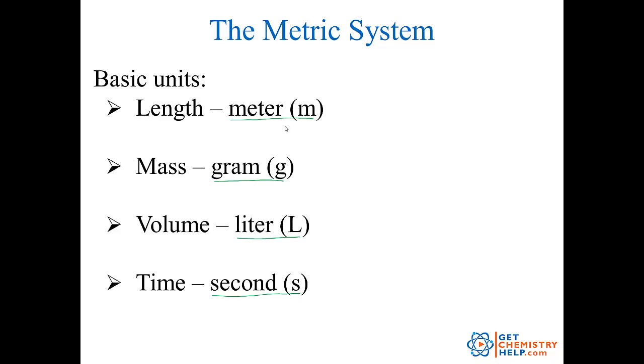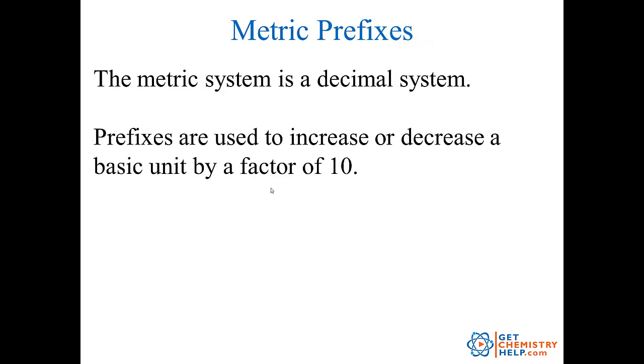Now the way they make a meter larger or smaller, or a gram larger or smaller, or a liter or a second is they use prefixes. So the metric system is a straight up decimal system. So that means it has a ones place, but it also has tens, hundreds, thousands, ten thousands. Then it has less than ones, it has tenths, hundredths, thousandths, ten thousandths, etc. So the way you know whether to make it larger or smaller is by a prefix.